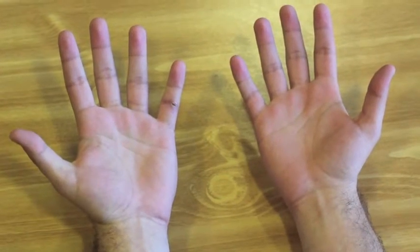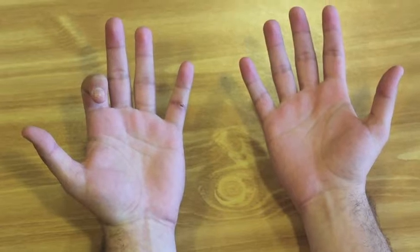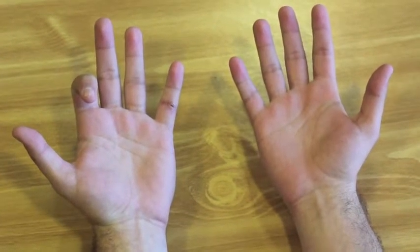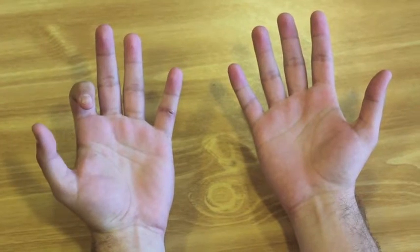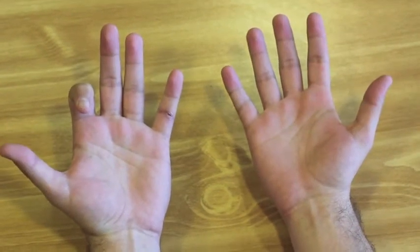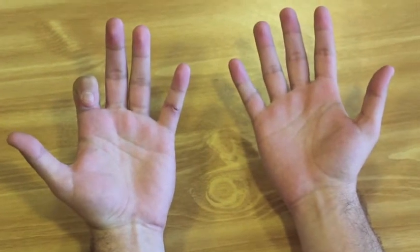So then we're going to open up our thumb and use our second finger, our pointer finger, for 9 times 2. 9 times 2 equals 18. We have a 1 to the left of where we just put our finger down and we have 8 fingers to our right. That's how it's going to work. 1 and 8. 18.